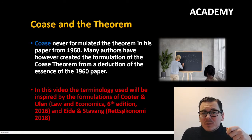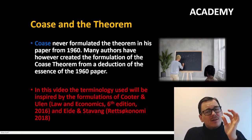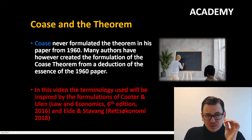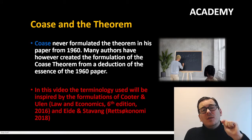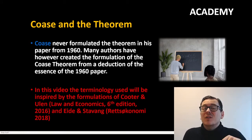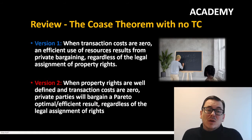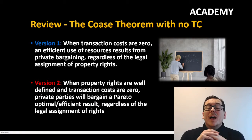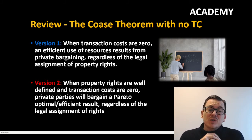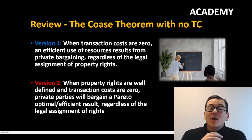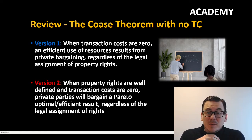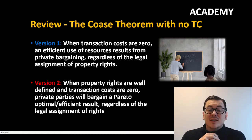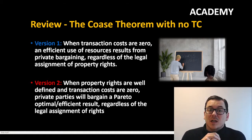Before we go to the normative version, let's look at the two other versions: the strict Coase theorem with zero transaction costs, and the Coase theorem where we have transaction costs. First, without any transaction costs, we have two formulations. Version one: when transaction costs are zero, efficient use of resources will result from private bargaining regardless of the legal assignment of property rights. Version two: when property rights are well defined and transaction costs are zero, private parties will bargain to a Pareto optimal efficient result regardless of the legal assignment of rights.